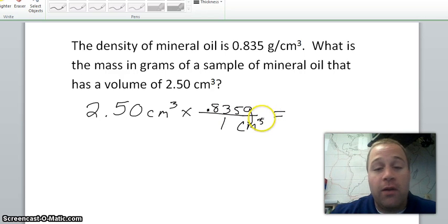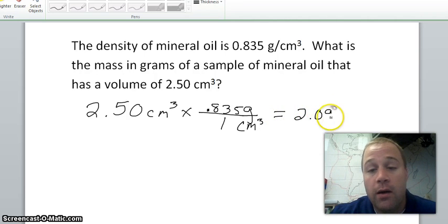Notice now, one's below the line so that's what we're going to divide by. So really what this is is 2.50 times 0.835. You get 2.0875. I'm just going to round it and call it 2.09 grams.